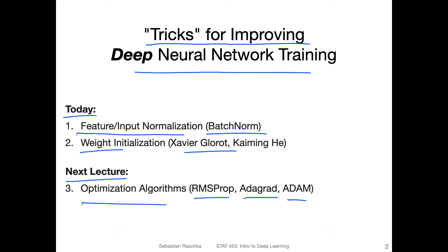Personally, I think stochastic gradient descent with momentum and Adam are still the most useful, or at least most popular ones.